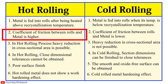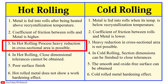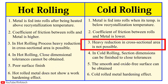In hot rolling process, coefficient of friction between rolls and metal is higher, whereas in cold rolling process, coefficient of friction between rolls and metal is lower. In hot rolling process, heavy reduction in size is possible, whereas in cold rolling process, heavy reduction in size is not possible.